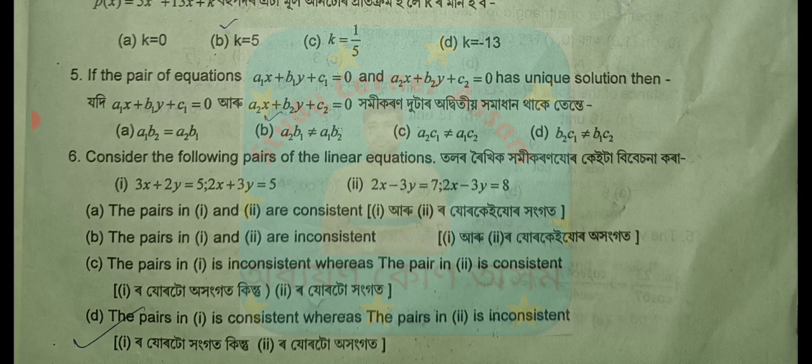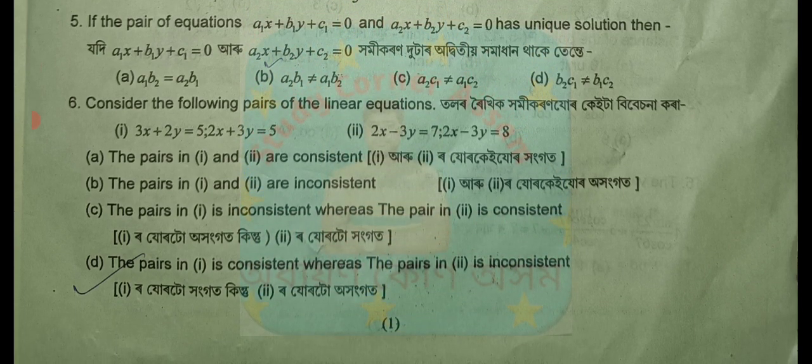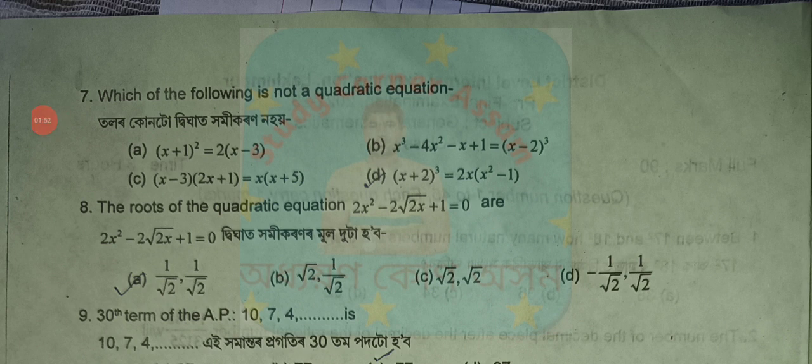Question number seven: A and one quite a five — option D. Next, question number eight.